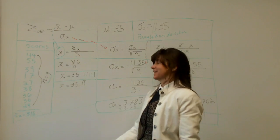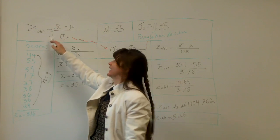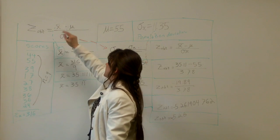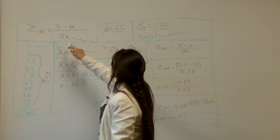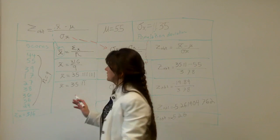Z obtained formula. This is how we use the Z obtained formula. Z OBT means obtained equals bar X or the sample mean minus mu the population mean divided by population deviation mean. We'll take this step at a time.